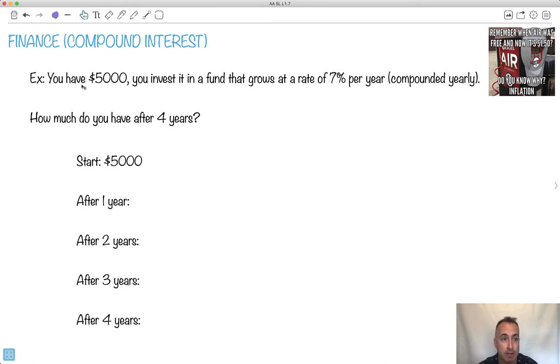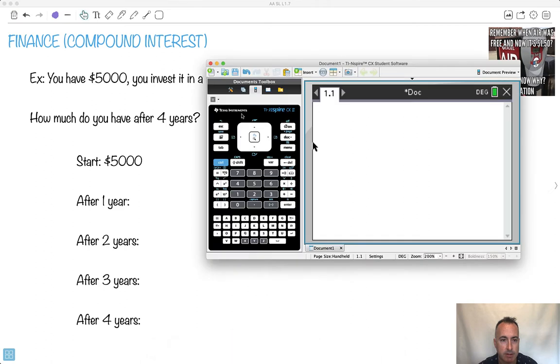Alright, let's try to do this here. So we've got, let's say we consider the situation, we have $5,000 and you invest it in a fund, it grows at a rate of 7% per year, and we compound this yearly. We'll explain this a little bit later. How much do you have at the end of four years? I'm just trying to show you how it works in general here. So let's just say I'll take my calculator here, clearly right now at the beginning I have $5,000, right?